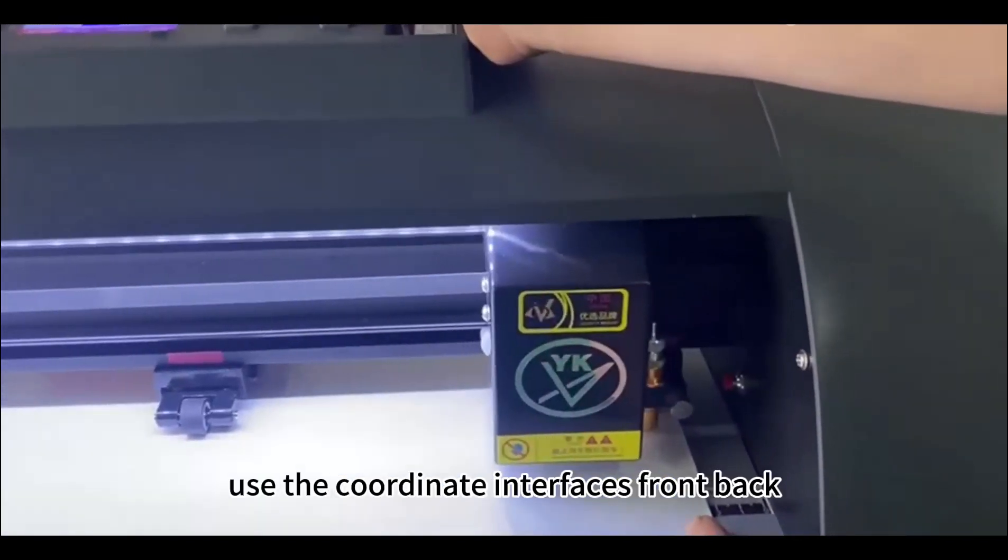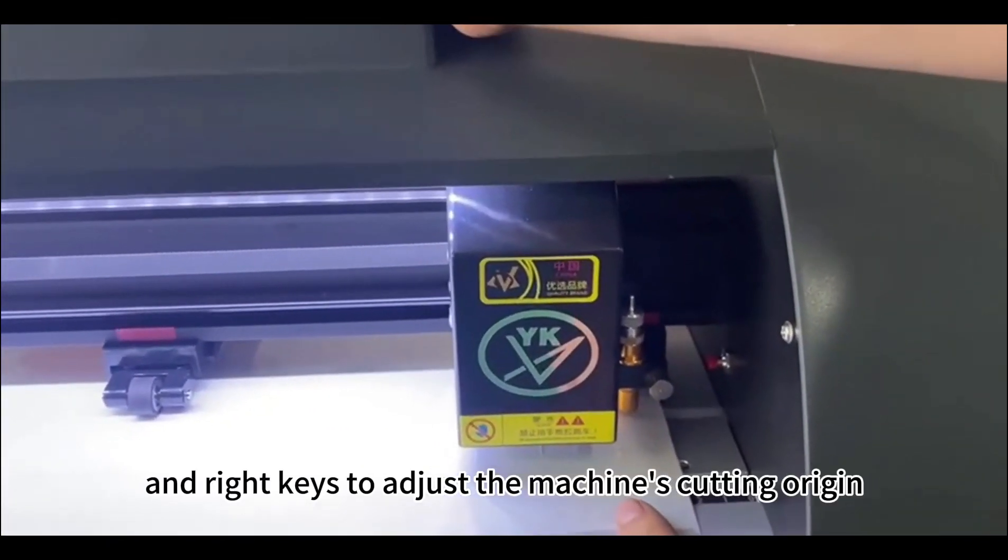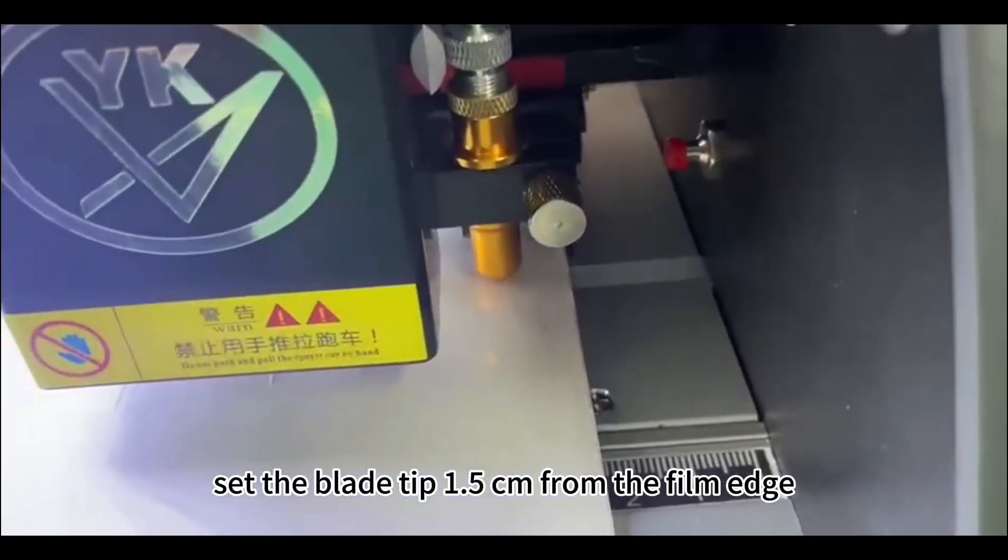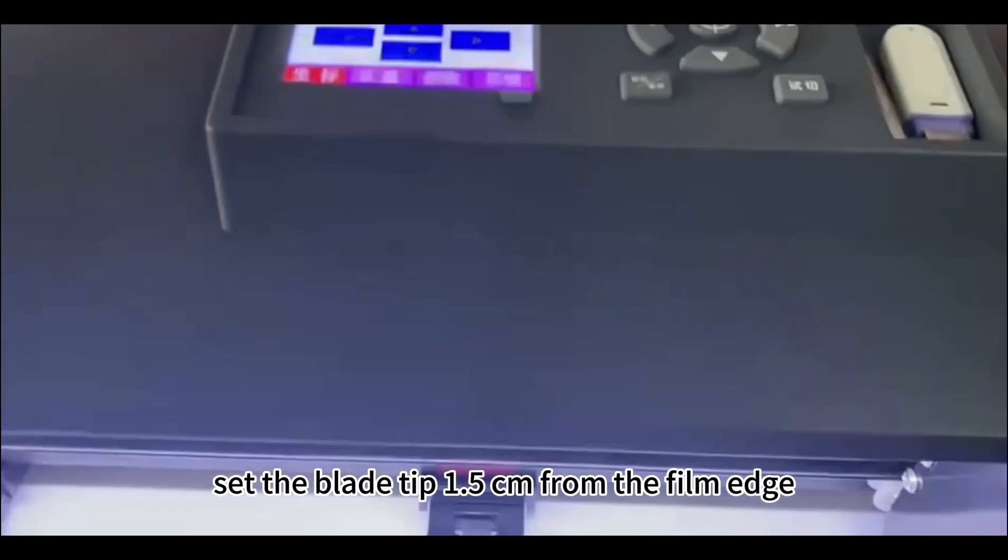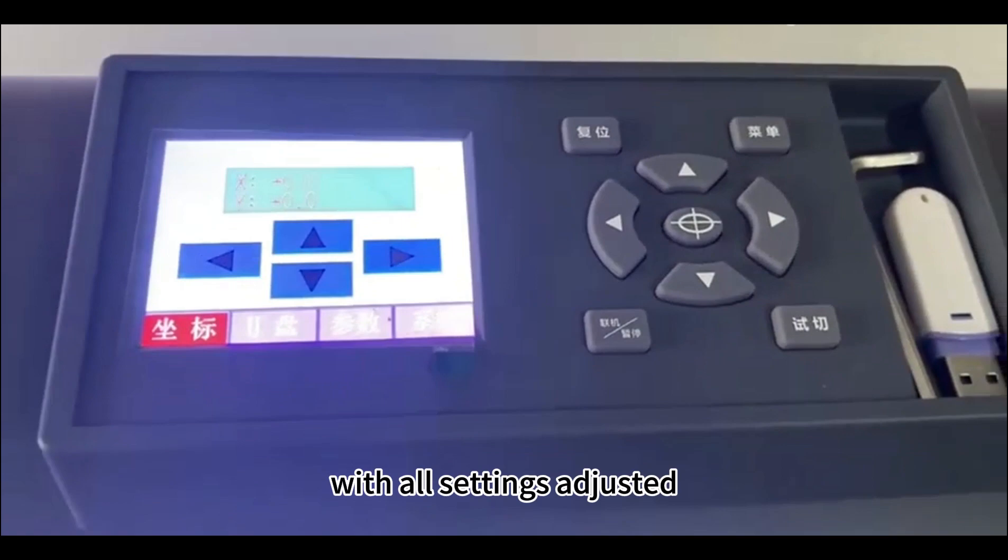After adjusting the blade, use the coordinate interface's front, back, left and right keys to adjust the machine's cutting origin. Set the blade tip 1.5 cm from the film edge right in front of the first pressure rod and pressure wheel. With all settings adjusted, your machine is all set up and ready for operation.